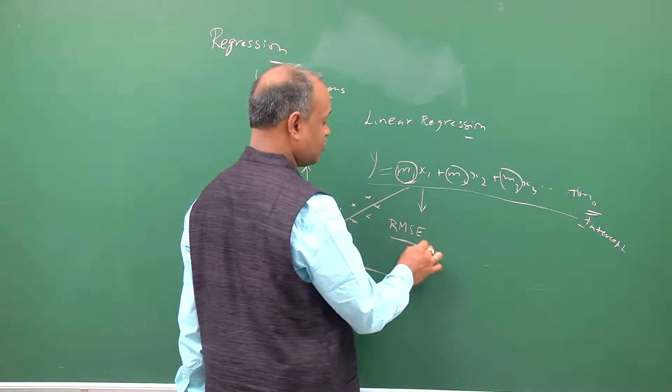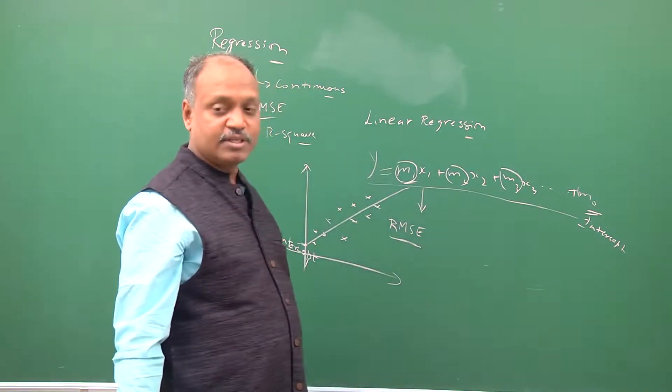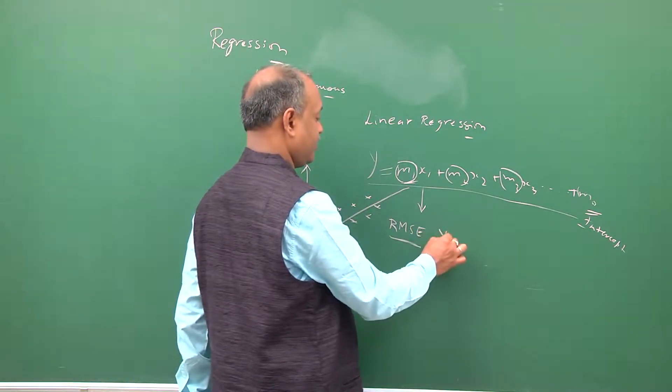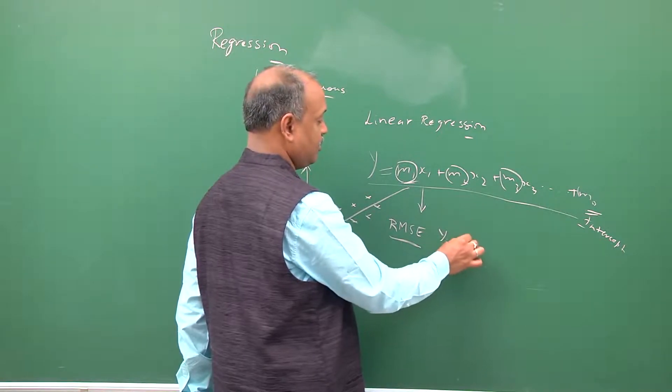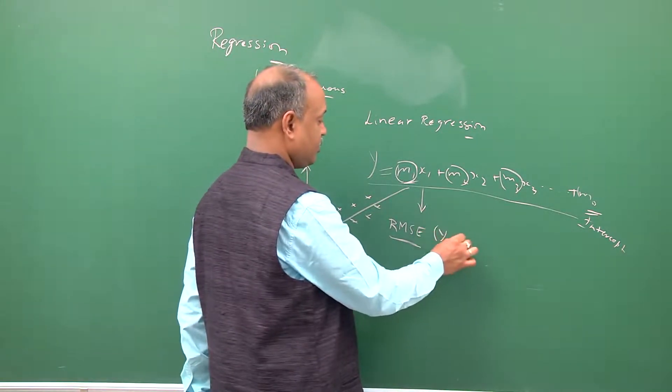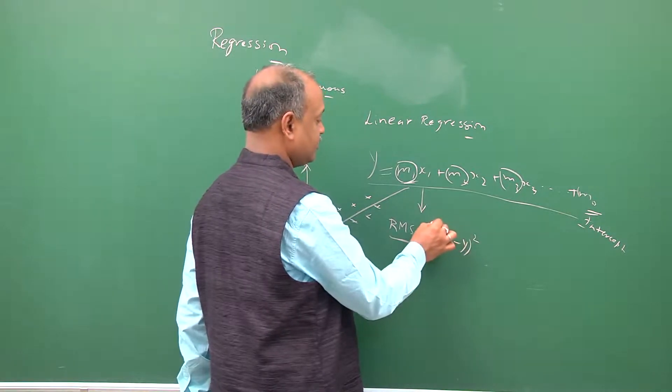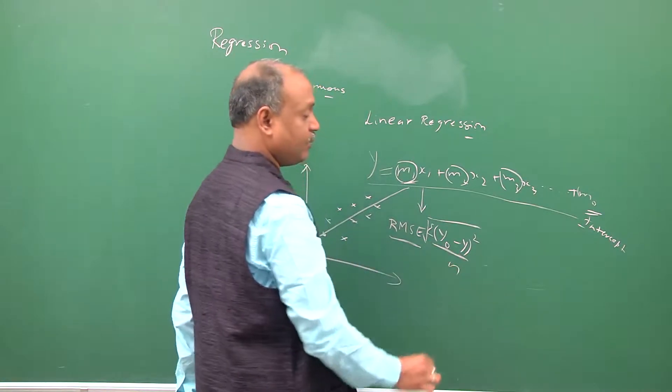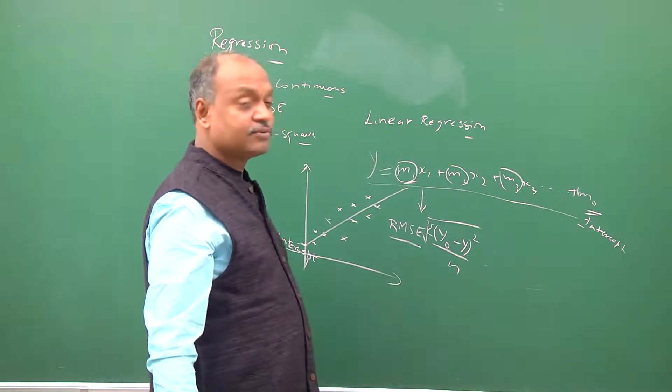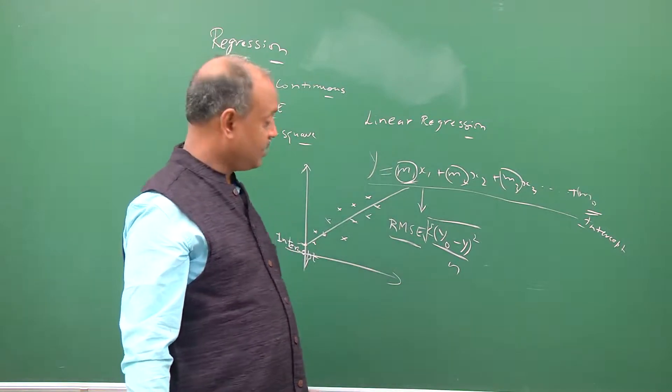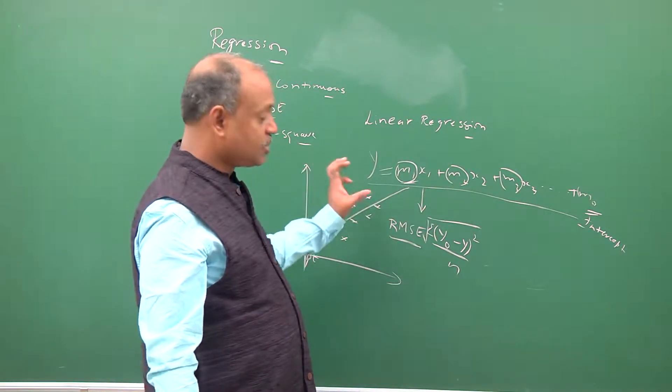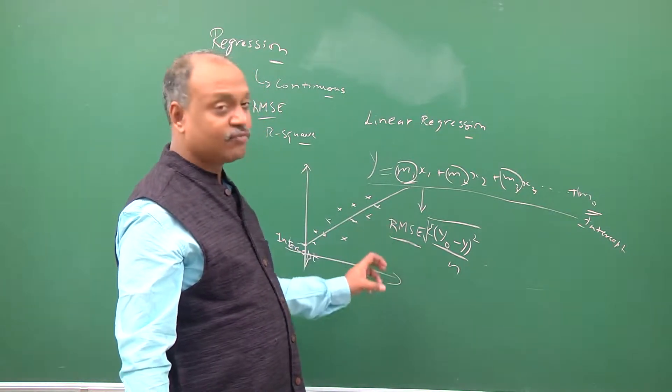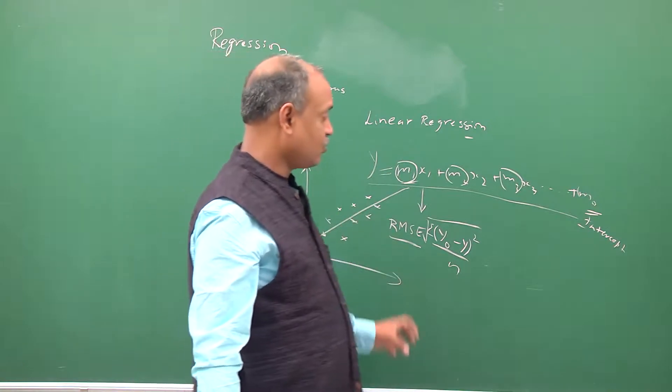You will see whatever is the original y minus corresponding y value, you will take a sum of that, then you will do the square root of that divided by n. The point is RMSE gives you a measure of how far the projected solution from the original data by taking a square of the error, summing them, divided by n and taking the root of that.